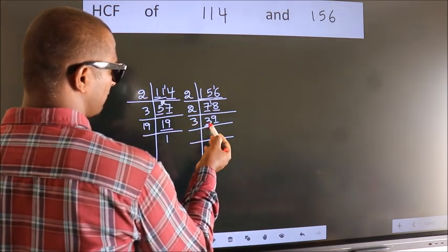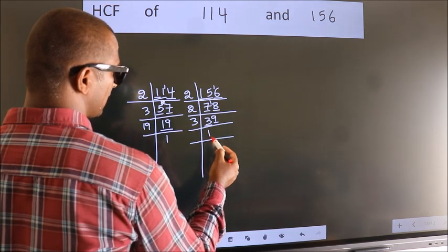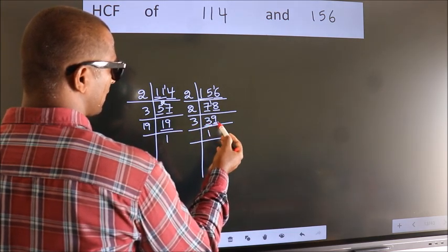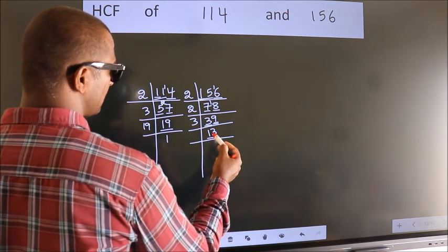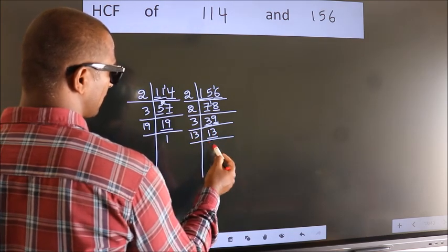First number 3. When do we get 3 in 3 table? 3 once 3. The other number 9. When do we get 9 in 3 table? 3 3 is 9. Now, 13 is a prime number. So 13 once 13.